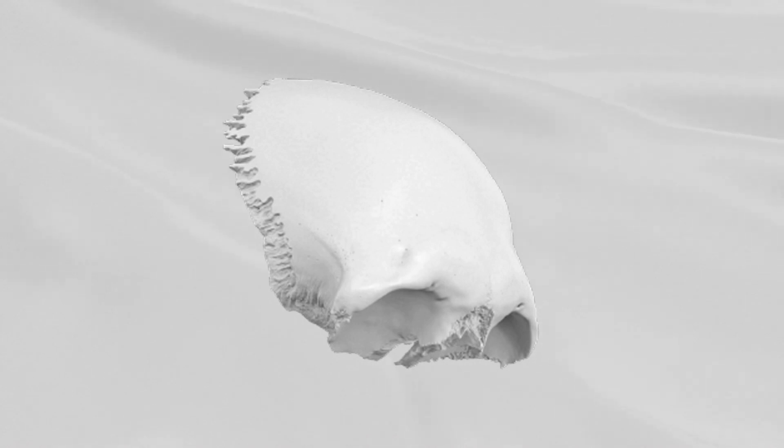Below the frontal eminences, and separated from them by a shallow groove, are two arched elevations, the superciliary arches. Their medial ends are prominent, which are joined together by a smooth elevation named the glabella.